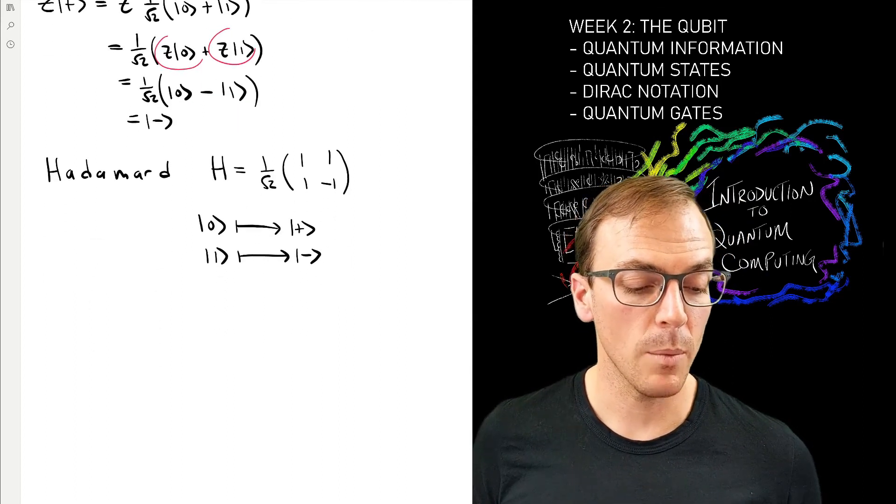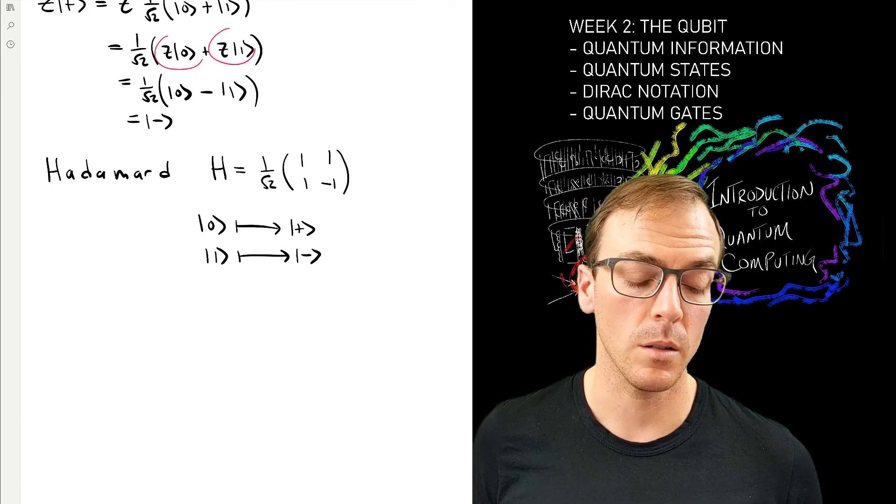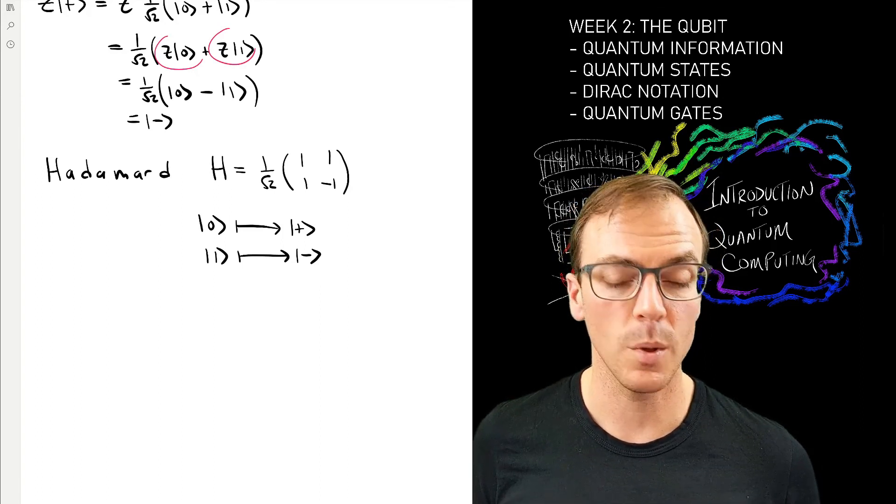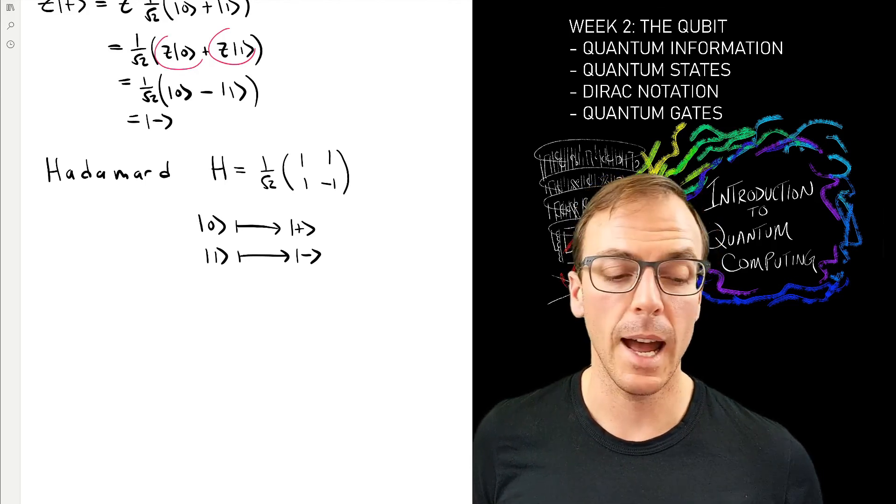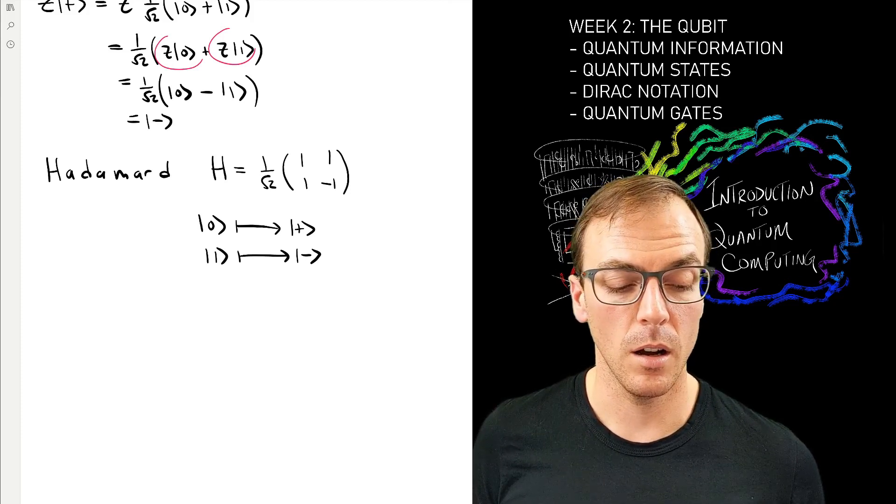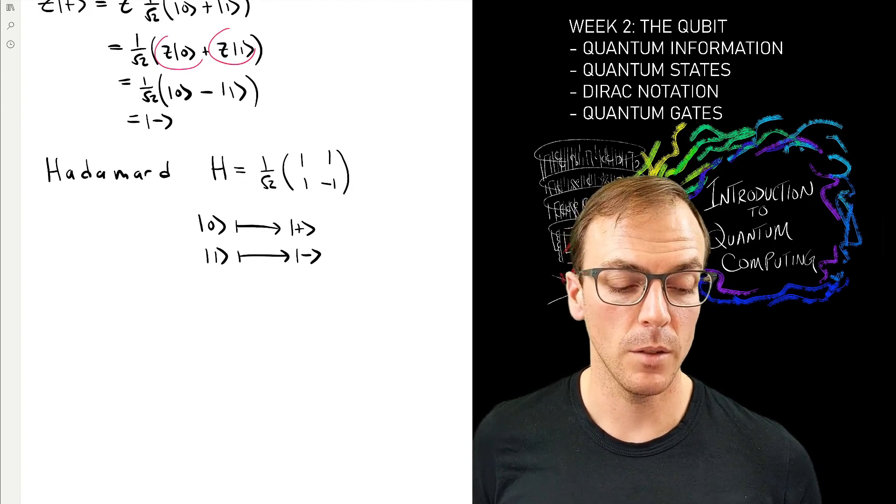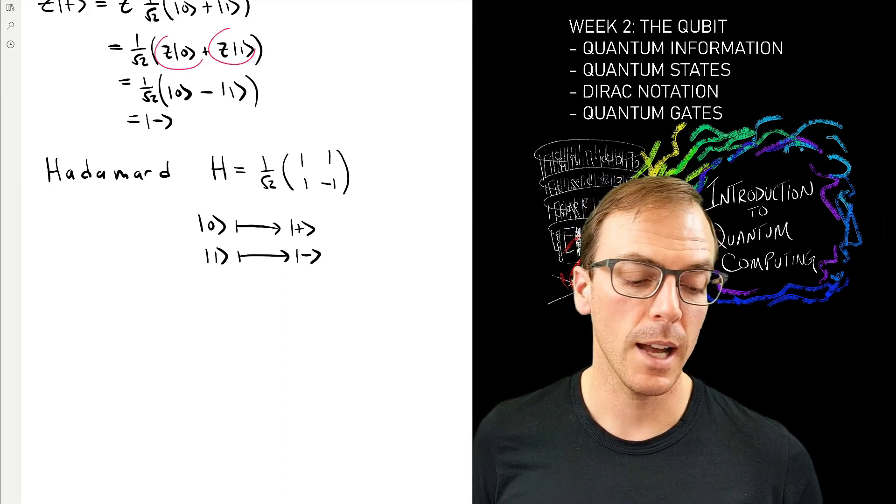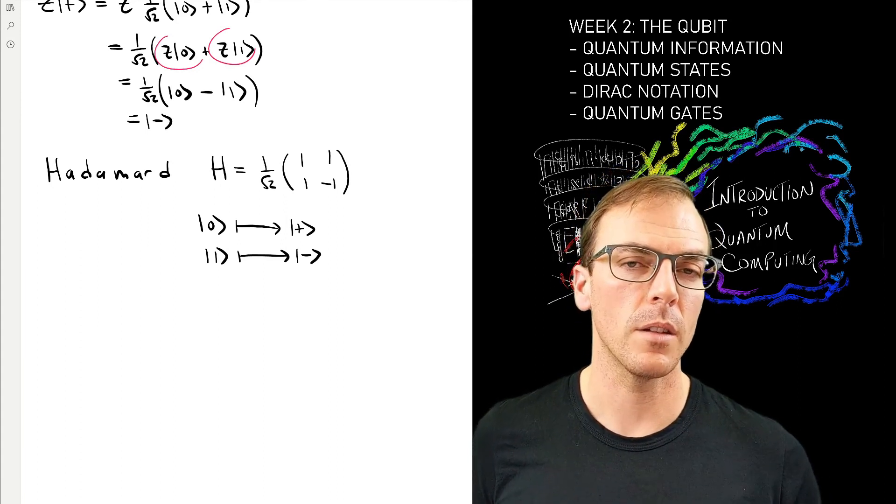What typically happens in almost all the quantum circuits that you see, at least the introductory ones, is we by convention start every computation in which all of the qubits are in the zero state, and then we start to add gates to our quantum circuit. What you'll find is that almost all quantum algorithms start with the first step of applying this Hadamard gate to every qubit to generate these superpositions.